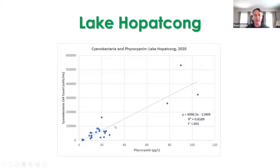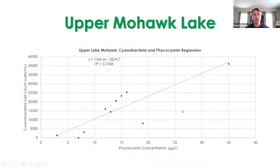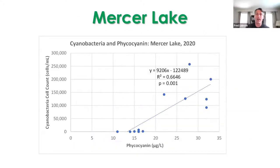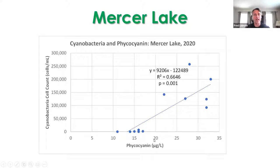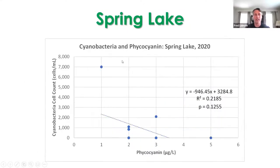We've seen a similar relationship at other lakes. Here's Upper Mohawk Lake — we also used data from Lake Mohawk, and here's a statistically significant trend between the cell counts and phycocyanin for Mercer Lake. But I want to emphasize this doesn't always occur.